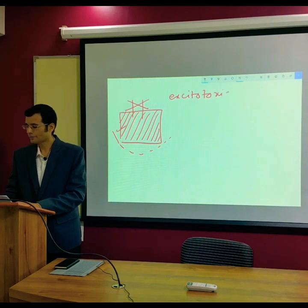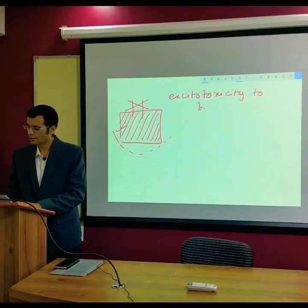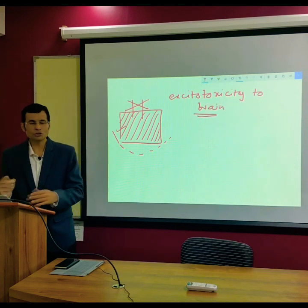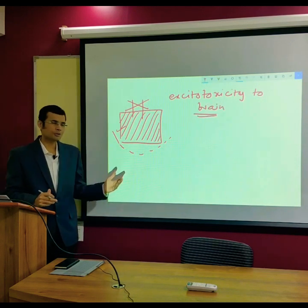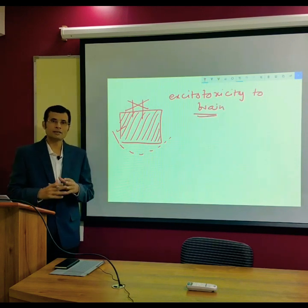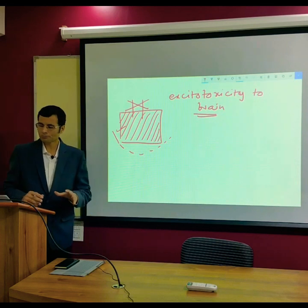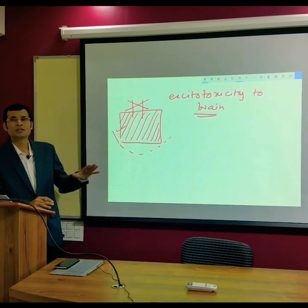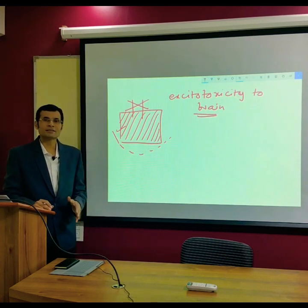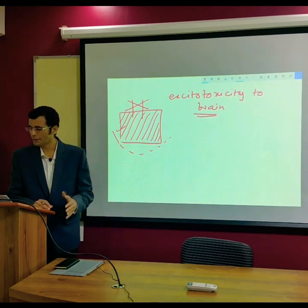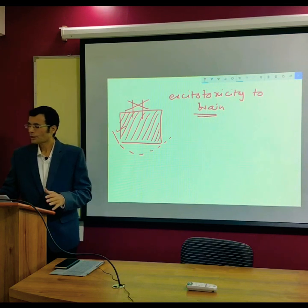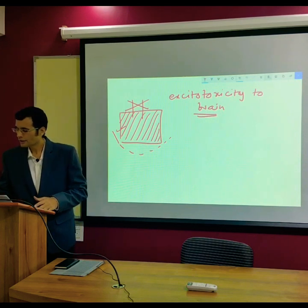This extension of damage beyond the original ischemic zone is described as penumbra. Basically, it is excitotoxicity to the brain, and the neurotransmitter involved in this is glutamate.